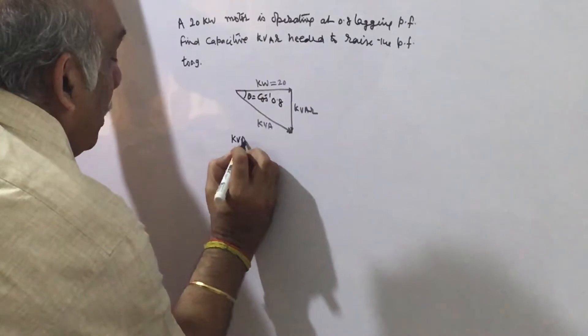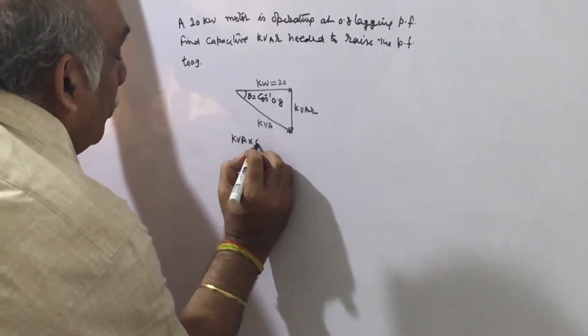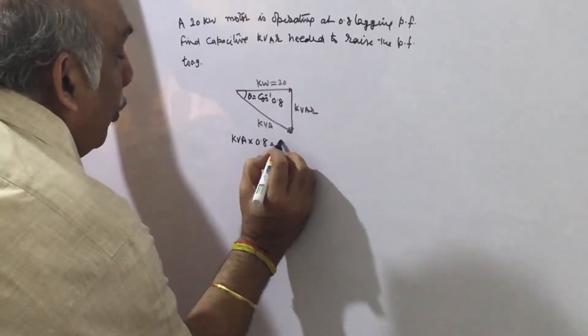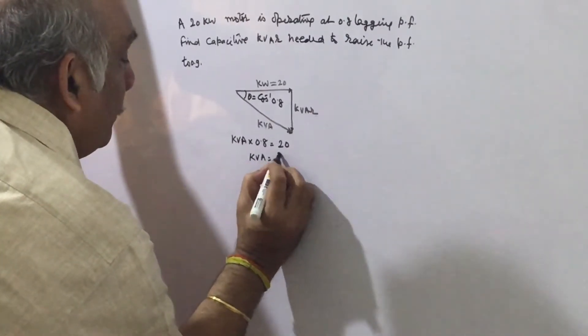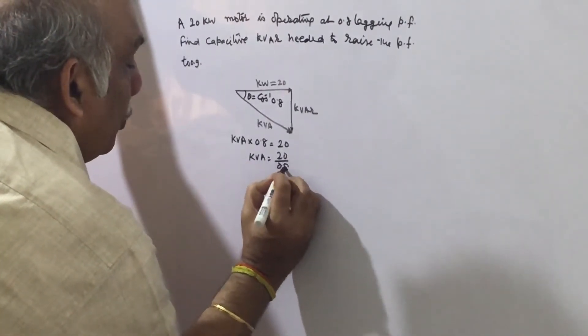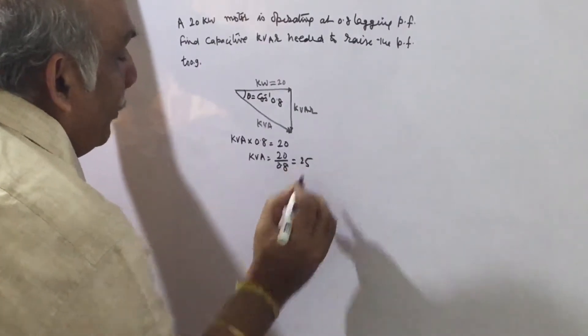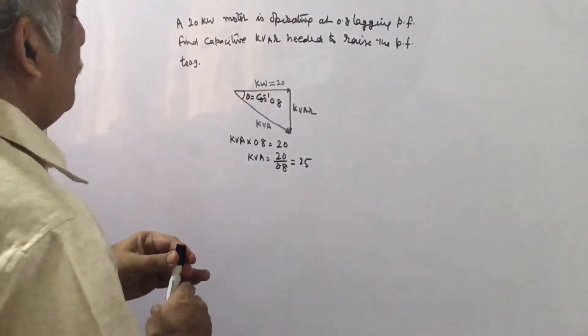We know that kVA times power factor, that is 0.8, equals kilowatt, that is 20. So kVA will be equal to 20 divided by 0.8, which equals 25.